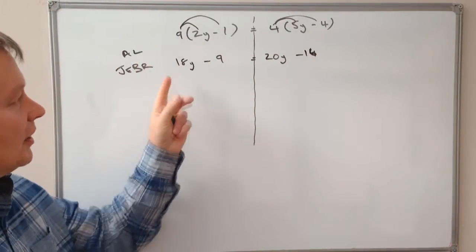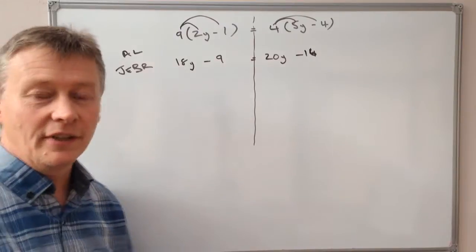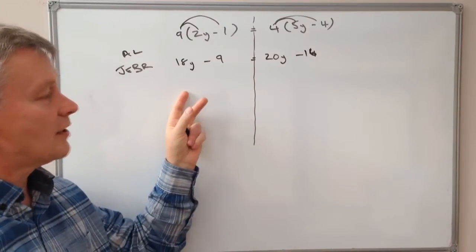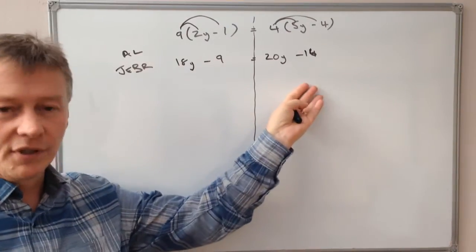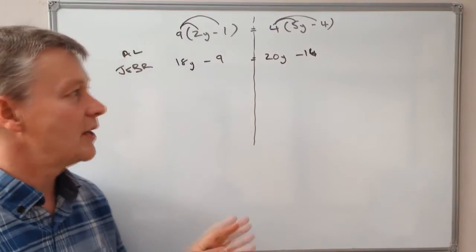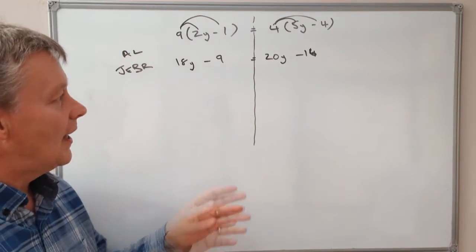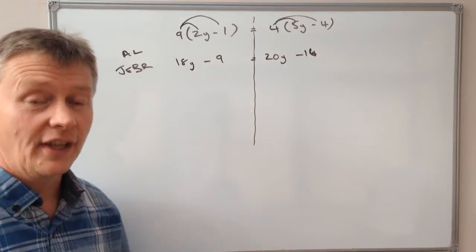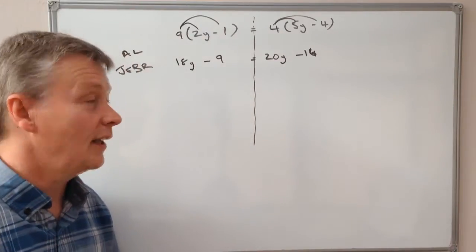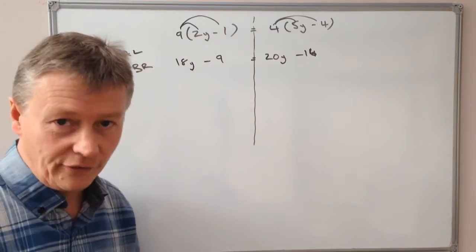Now I've got rid of the brackets, but I still need to get my y's on one side and my numbers on the other. There are actually two ways to do this. I'm going to show the first way in this video, and in the next video I'll do it slightly differently.